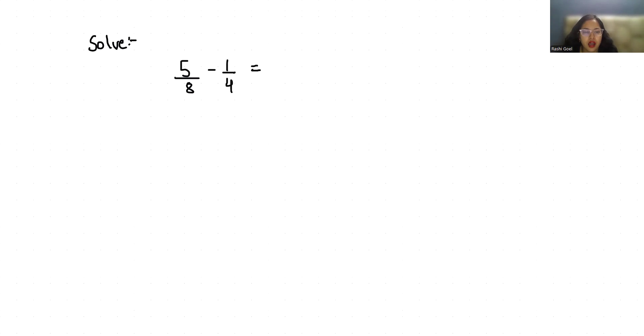LCM means least common multiple of denominators, that is 8 and 4. So we will take LCM like this. We will start with 2 and divide both the numbers one by one. So 2 in table of 8 comes at 4 place and 4 comes at 2 place.